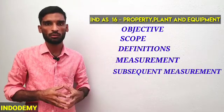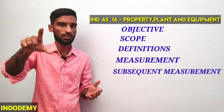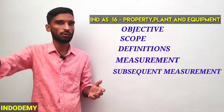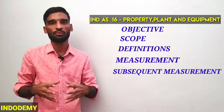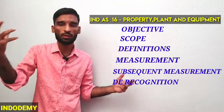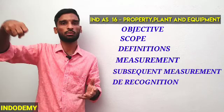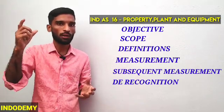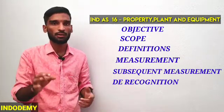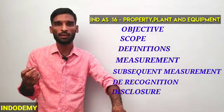Then subsequent measurement — after the initial measurement, say after one year, we carry it in the balance sheet. Depreciation is charged, which reduces the value. That is subsequent measurement. Then de-recognition — de-recognition means we remove an item from the balance sheet, eliminating the account when a particular asset is disposed of or retired.